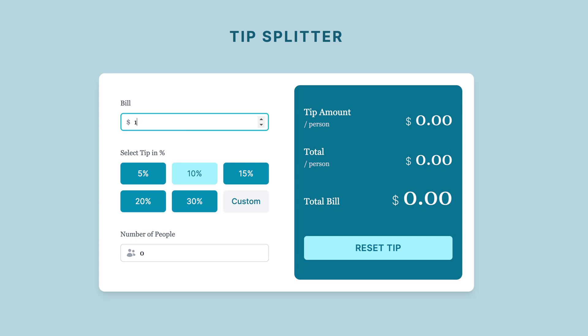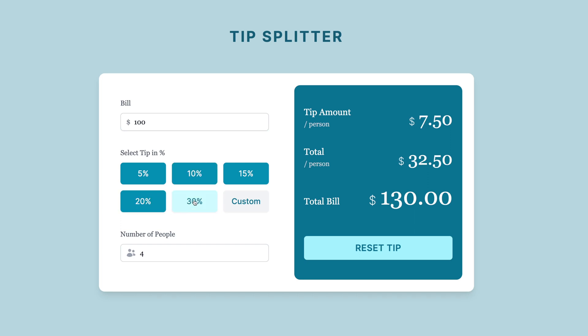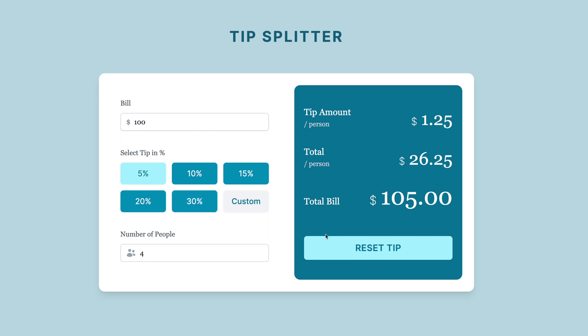And that's it! We have built a tip calculator app in Next.js 13 with Tailwind CSS, using client and server components. Don't forget to like this video, subscribe to our channel for more exciting tutorials, and hit the notification bell to stay updated. If you have any questions or suggestions, please leave them in the comments down below. Until next time!